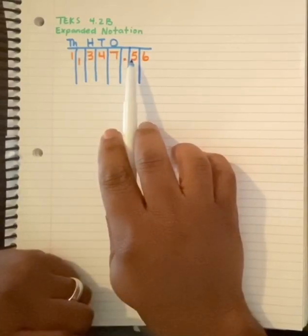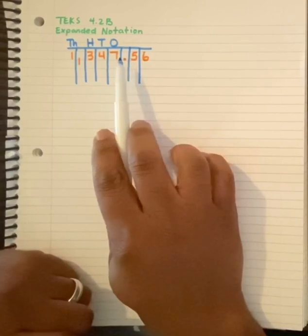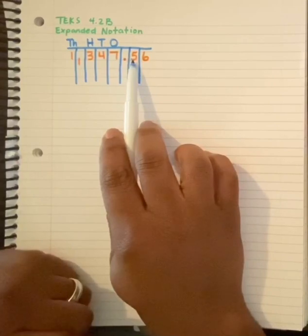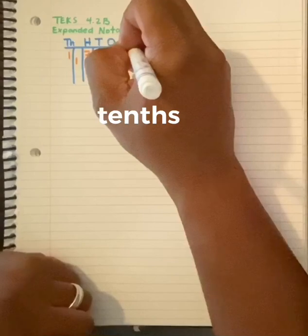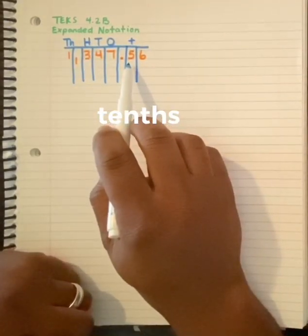For fourth grade, this may be new to you. This piece here is my decimal. We also call it and. This next digit, or my five, its value is called the tenths place. And we use a lowercase t for tenths place.